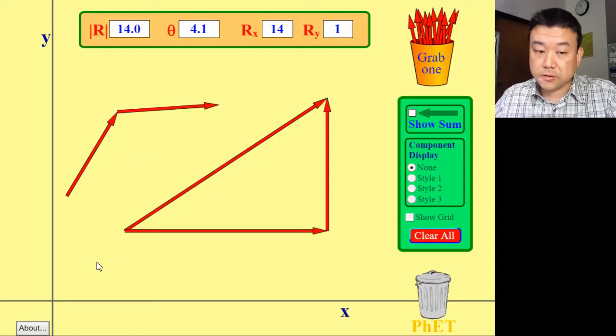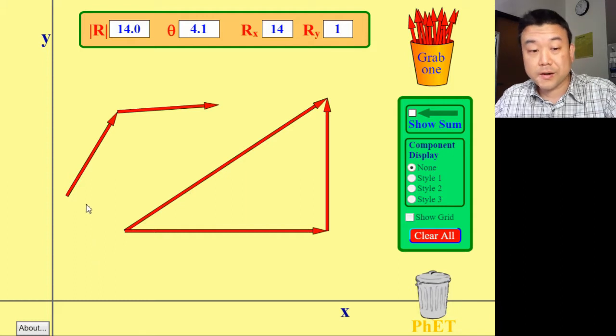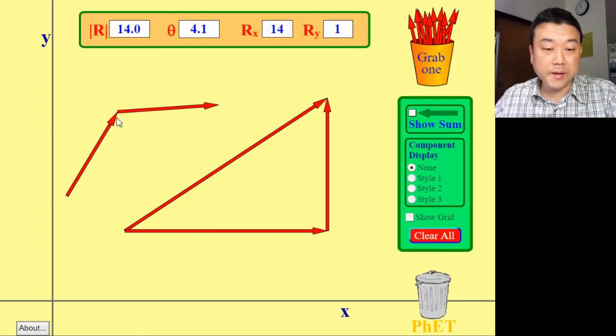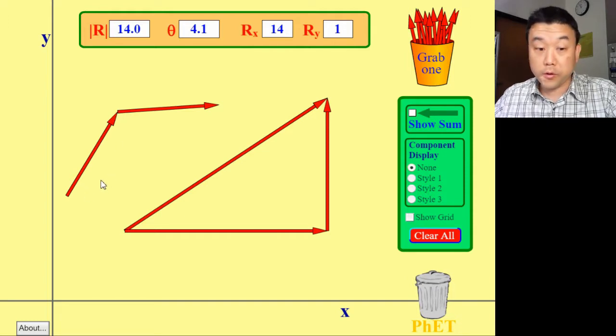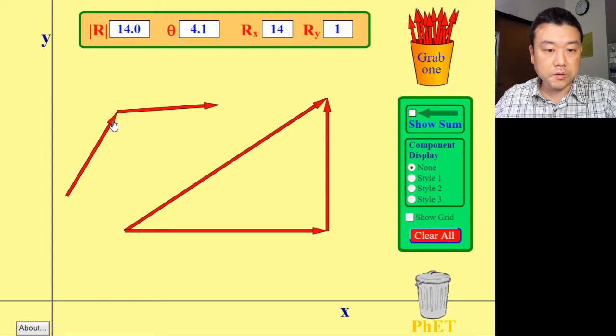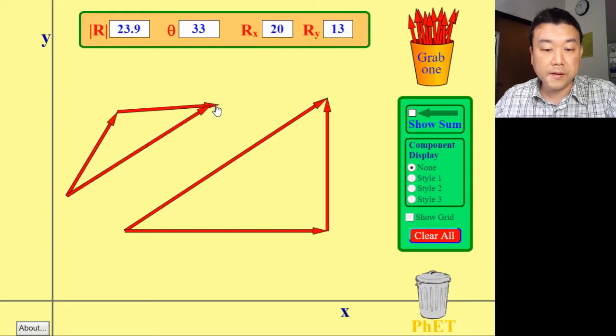Sometimes this is called head-to-tail method because of what it looks like. You are putting head of the arrow to tail of the next arrow. And the overall effect of these two, one after another changes, is that you have a total change that takes you all the way from the initial starting place to the final ending place. So this vector is the sum of these two vectors here.